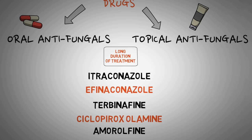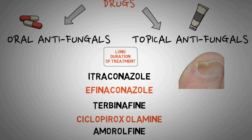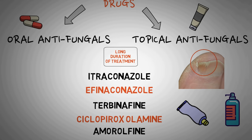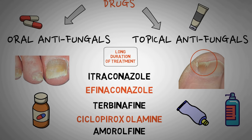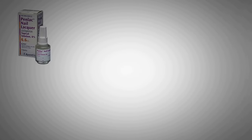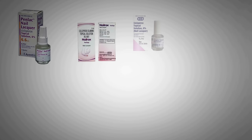If you only have a superficial or mild infection of the nails, you can apply topical drugs like antifungal creams, lotions, or lacquers and skip oral antifungal medicines. But if you have extensive nail involvement, you need to take oral antifungal medicines. Nail paints containing Ciclopirox olamine and Amorolfine are most commonly used as the first line of treatment.